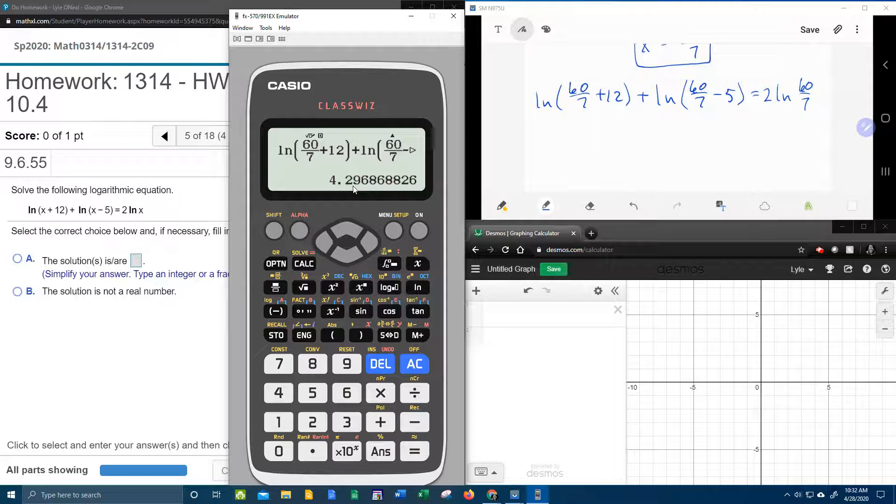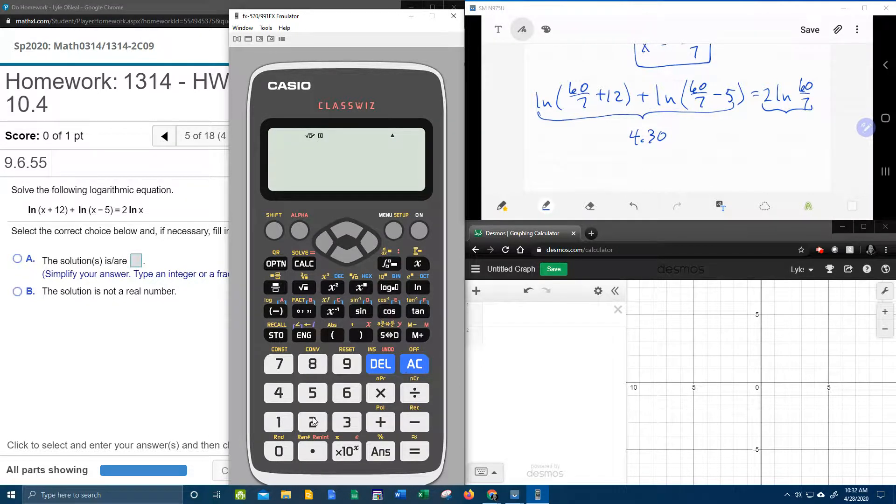Okay, so if I round that to maybe two places, 4.30, or if I don't round it at all, I could just copy and paste that here. So let's say that all of this stuff right here, all of that is about 4.30 rounded. Okay, so now what I want to check, does the right-hand side calculate to the same decimal value? If it does, then our answer is correct.